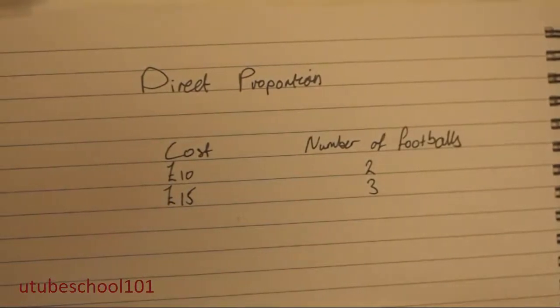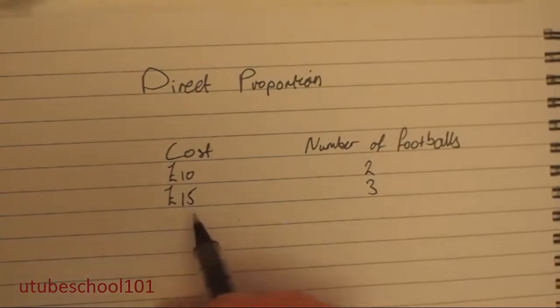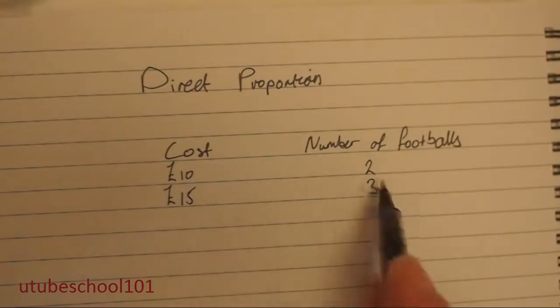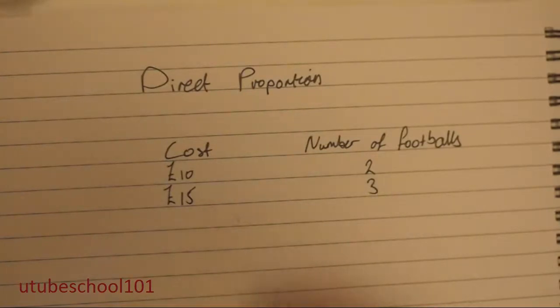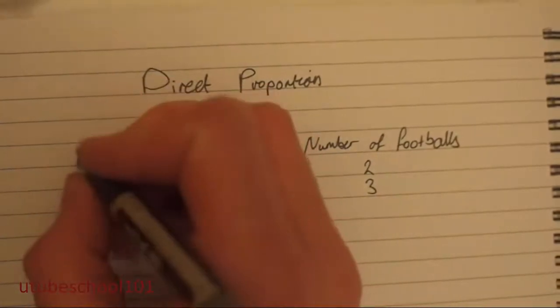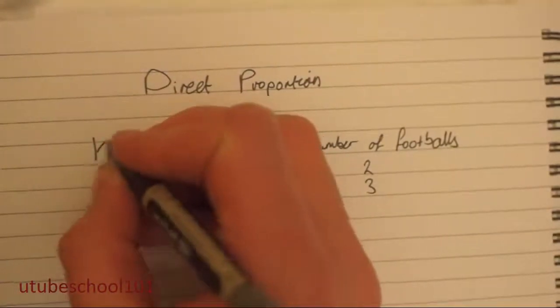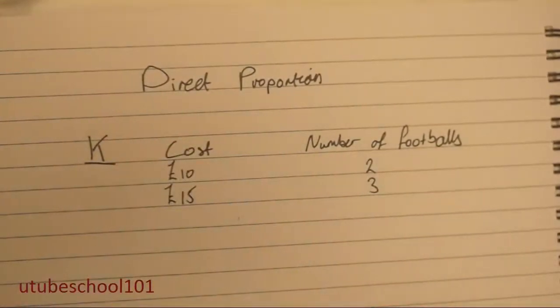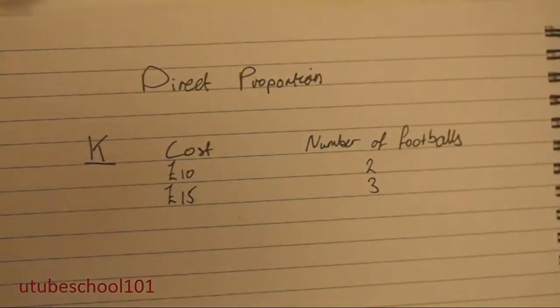So you can see the link. Obviously, if the person is going to buy more footballs, he's going to end up spending more. And it's going to equally go up spending more, five pounds per ball. So this five pounds per ball is the k. And the k is almost the proportion between the two values.